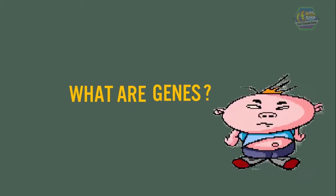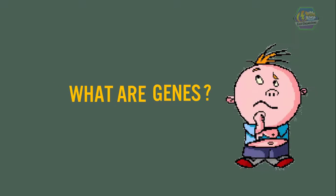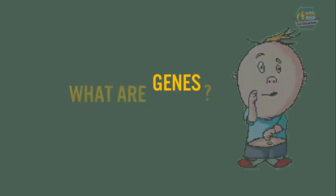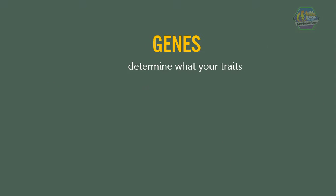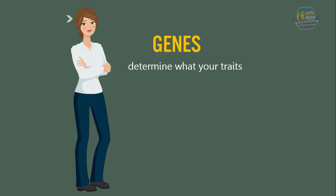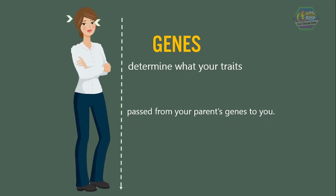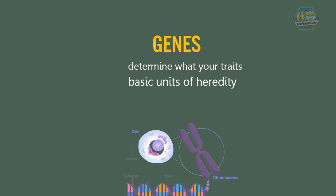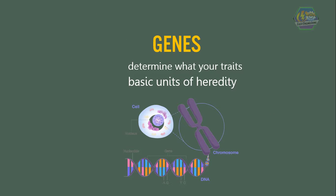First, what are genes? Basically, they determine what your traits are — like the color of your hair, how tall you are, and the color of your eyes when you are born. This information is passed from your parents' genes to you. Genes are the basic units of heredity; they consist of DNA and are part of a larger structure called the chromosome.